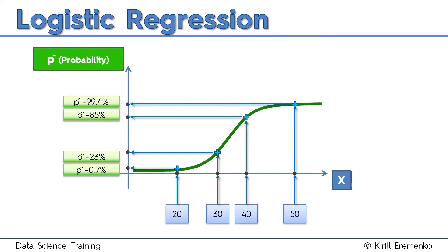That's the first thing you can get out of a logistic regression. We'll be using this probability actively when building geodemographic segmentations, because you use this probability as a score — you can rank people from most likely to least likely to take up your offer. It's actually better than just having a one or zero, because you have a probability and can order people by it.